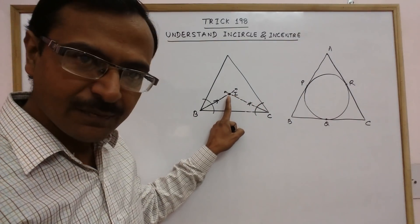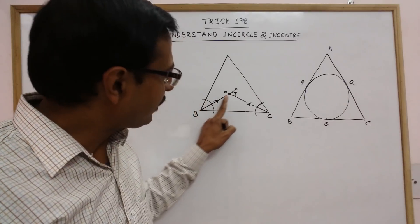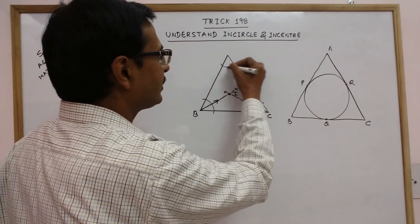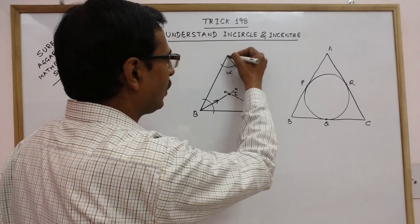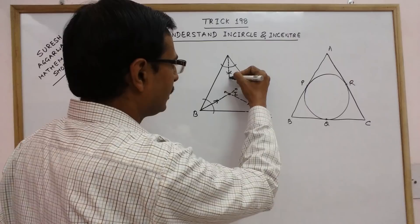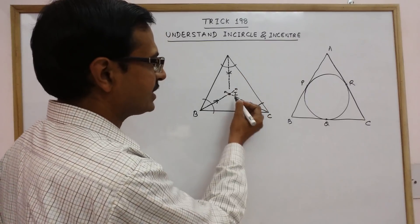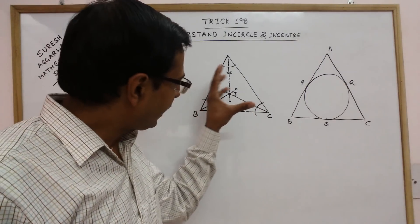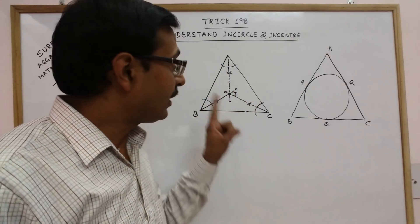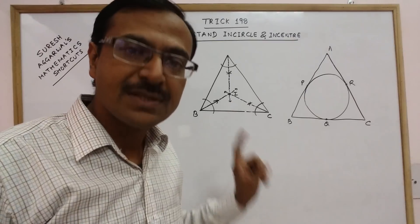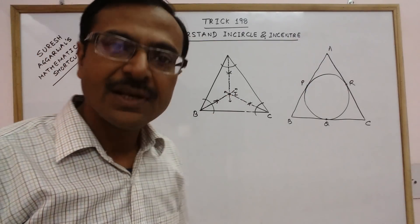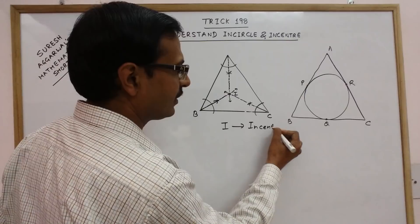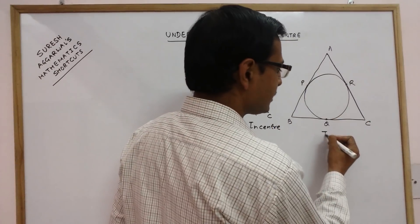I have labeled this point as I. This is the point of intersection of the angle bisectors of two angles. If you draw the angle bisector of the third angle also, it will automatically intersect the two other angle bisectors at this same point I. So all three angle bisectors of a triangle are concurrent — they pass through the same point — and this point is known as the incenter. This circle is known as the incircle.